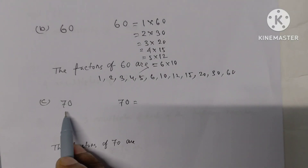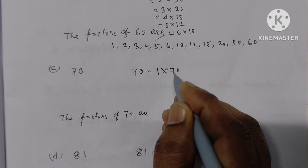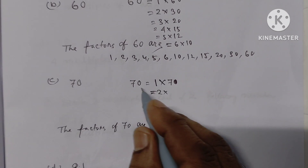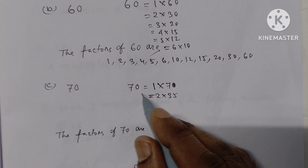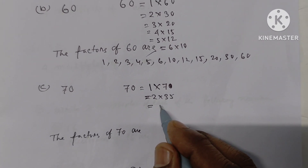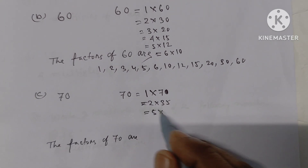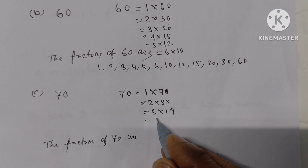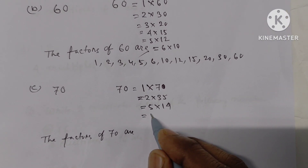Next one is 70. For 70, we know 1 x 70. Let us find all the factor pairs of 70.